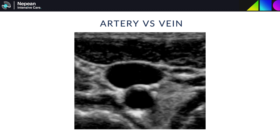Differentiating veins from arteries is probably something that seems extremely straightforward for intensivists, but reliance on compression is not always going to be foolproof. Remember, veins can also be pulsatile, and in severe hypovolemia, the artery can also be easily compressed. Veins tend to be more oval with thin walls and are easy to compress. Arteries, by contrast, tend to have a consistently round shape with thicker hyperechoic walls and are less easy to compress. Whilst arteries are more pulsatile, remember that there can be special scenarios where the vein may be more pulsatile, such as with ventricular assist devices.